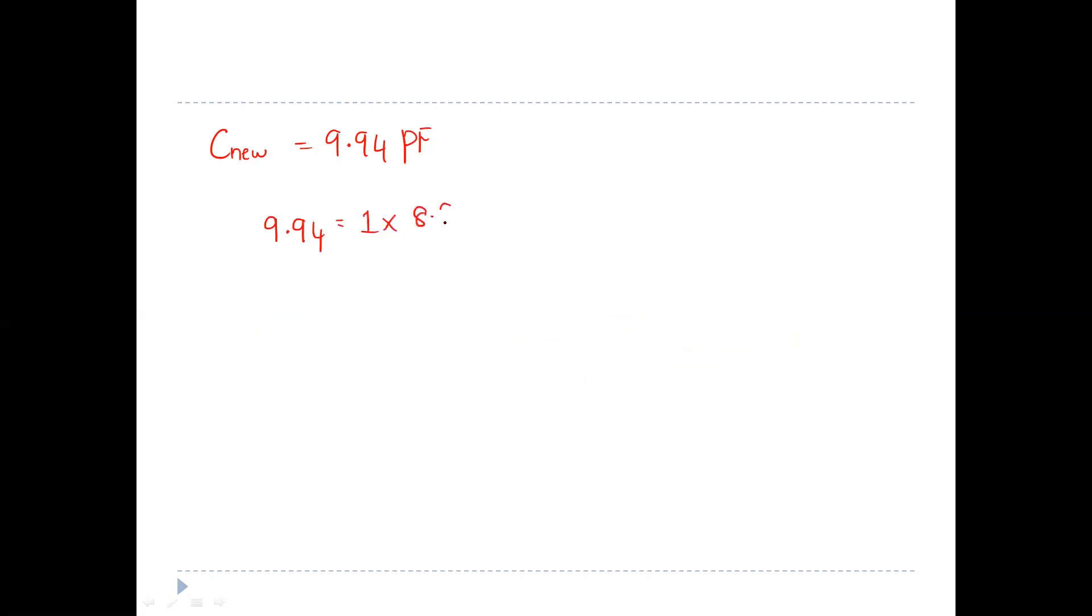C is equal to epsilon r, epsilon 0, area over distance. Area is the same, but we don't know the new distance. So let's write the new distance as d_new. We can take d_new to the other side, so 9.94 will come to the denominator. If I solve that, the d_new value which I will be getting is 0.8 mm.